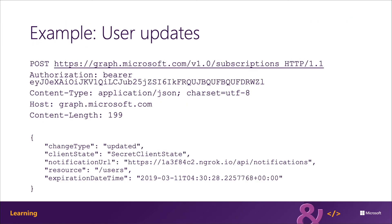Let's look at a process to create a subscription. What you see on the slide creates a subscription to receive change notifications on the users endpoint when users are updated. I'm submitting an HTTP POST to the subscriptions endpoint, with authentication in the authorization header along with content type, host, and content length. In the payload, the change type is set to the updated event. The client state is a string value I define that will be included in every single notification sent back to my service, so I can verify the notification is legitimate.